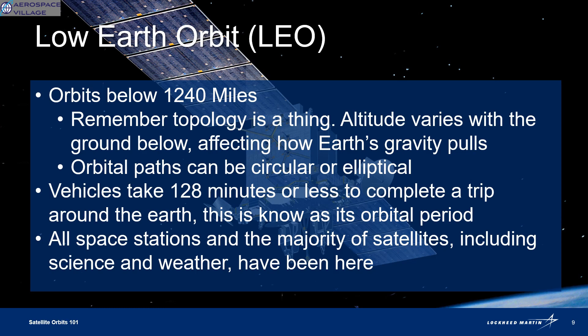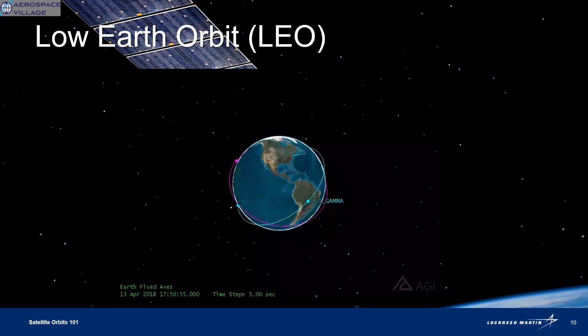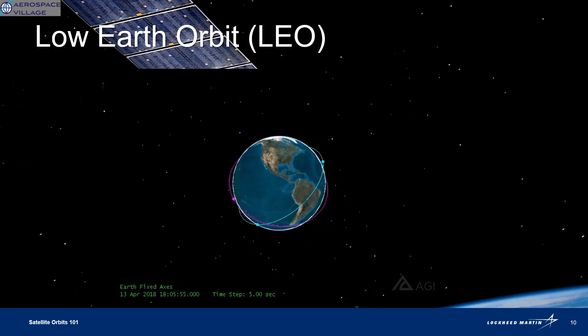There are four types of orbits to discuss. LEO, or Low Earth Orbit, is an orbit that happens at 1,240 miles or less above the Earth's surface. It can be circular or elliptical, as can all the other types. A vehicle at this type of orbit would take 128 minutes or less to make a trip around the Earth. There's a lot of stuff in LEO orbit right now, including the International Space Station. Let's take a look at what a LEO orbit would look like using some SDK software visualizations. Notice how close those satellites and orbital paths are to the Earth.